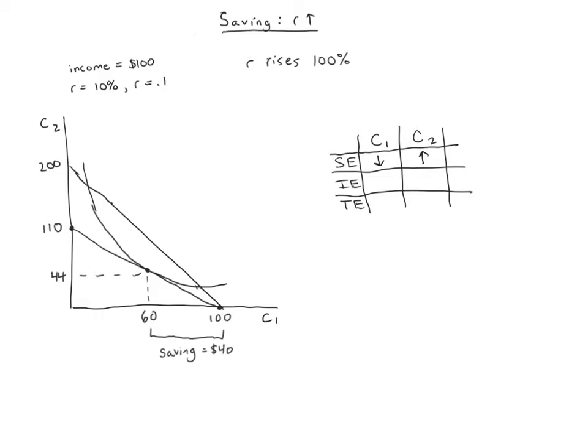Then we can think about the income effects. Clearly if the interest rate goes up it effectively makes you richer. We used to have this as our budget constraint, now we have this as our budget constraint. It's opened up a lot of new possibilities in here. So we're richer and what we're going to do is assume both of these are normal goods. It makes sense that general purpose consumption of goods should increase when your income increases regardless of whether it's today or tomorrow. So if both are normal goods and our income is increasing, these income effects are going to be positive for both.